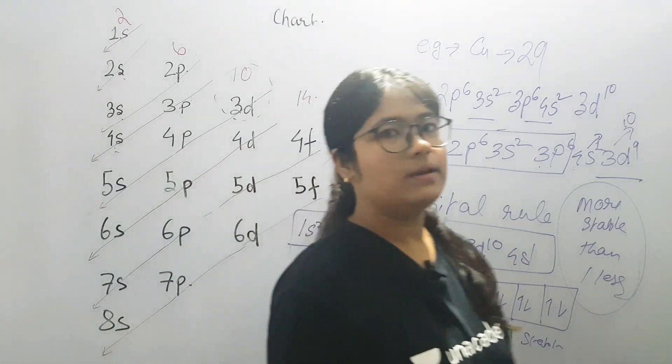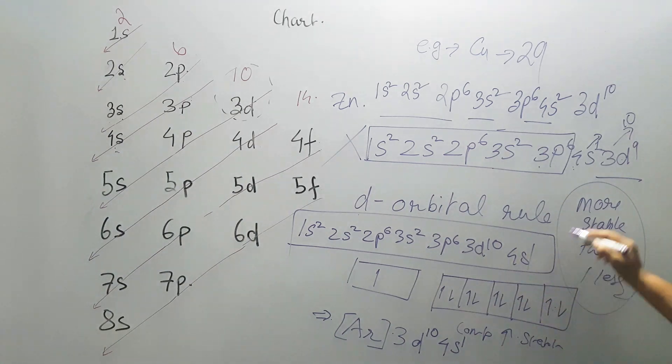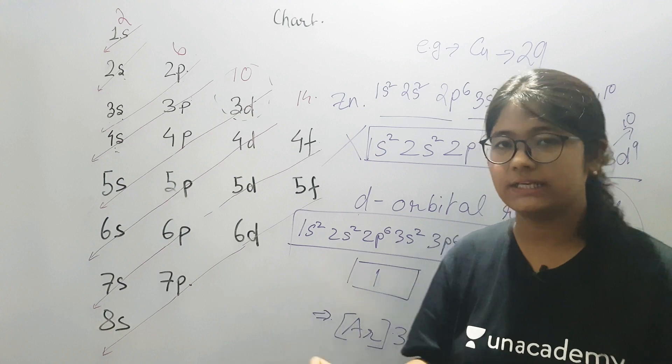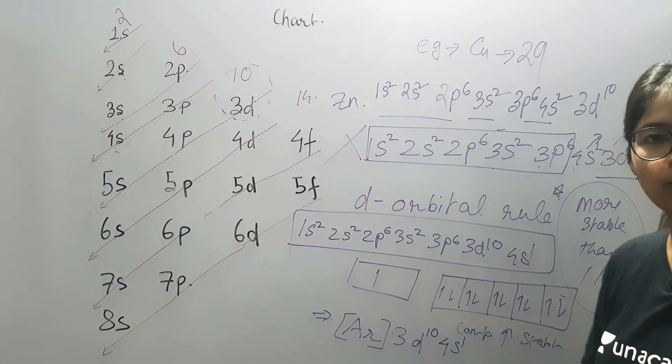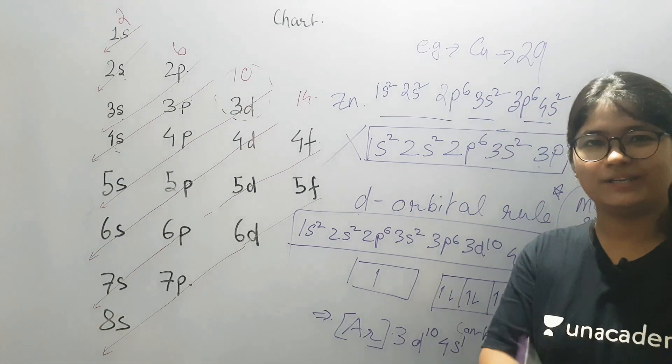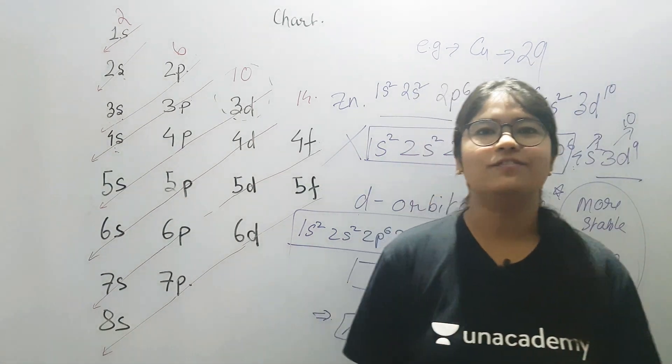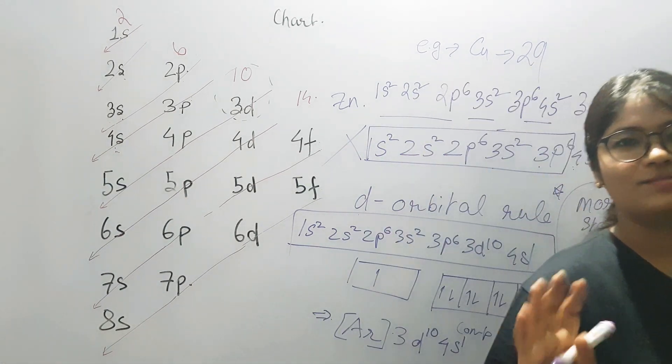And similarly, you can make the other exceptions based on this particular rule, that with D orbital, half filled or full filled D orbital is more stable than one less. Thank you so much everyone for joining me in this session. If you have understood, please like and share it with your friends as well. Take care, stay blessed. Bye-bye.